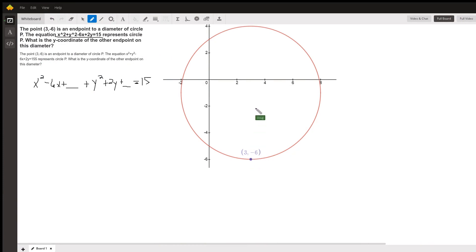The question is, how do we find the coordinates of the point that's on the other end of the diameter? And the key is that the center of the circle will be the midpoint of the diameter. So we have to find the center of the circle.